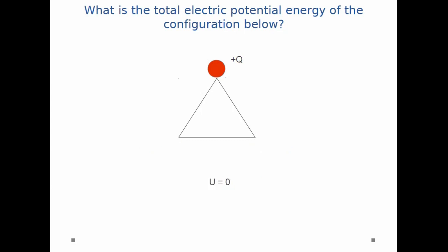I take the first point charge at infinity and move it to the very top of the triangle. There's no point charges around it, there's no electric field right now. It doesn't take any work to move it there, so the potential energy of this configuration is just zero right now.